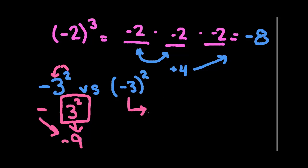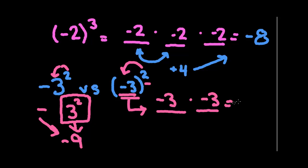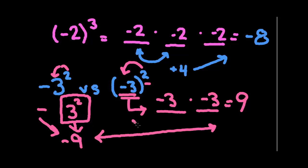That's very different from having negative 3 in parentheses and squaring it, because then you're squaring everything inside the parentheses. So you're multiplying negative 3 times itself, which gives you a positive 9. Be really careful to understand the difference between the negative when it does not have parentheses and when it does.